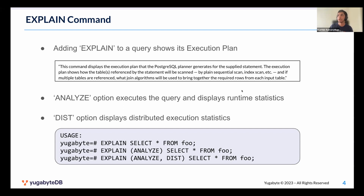A query goes through multiple phases from the time the user sends the query to the database system to the time the user gets back the data: parsing, rewriting, planning, and execution. The explain command does everything but execute the query — the query is parsed, rewritten, optimized, and planned, and explain shows you what that plan is. The analyze option takes it one step further: it actually executes the query and gives you runtime statistics like execution time and rows returned.